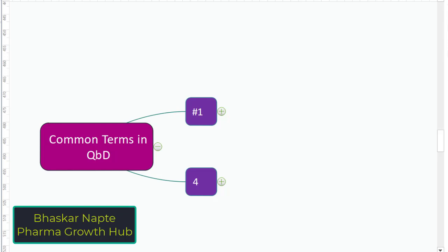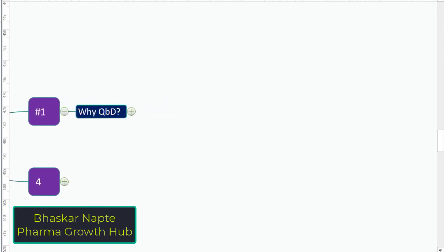The QBD approach has already been explained by the ICH guideline Q8, and the ICH guideline Q14 talks about the AQBD approach. So it becomes very important and necessary to understand the quality by design approach and some of the important terms associated with QBD. What is the reason that the authority or ICH has proposed the QBD approach?